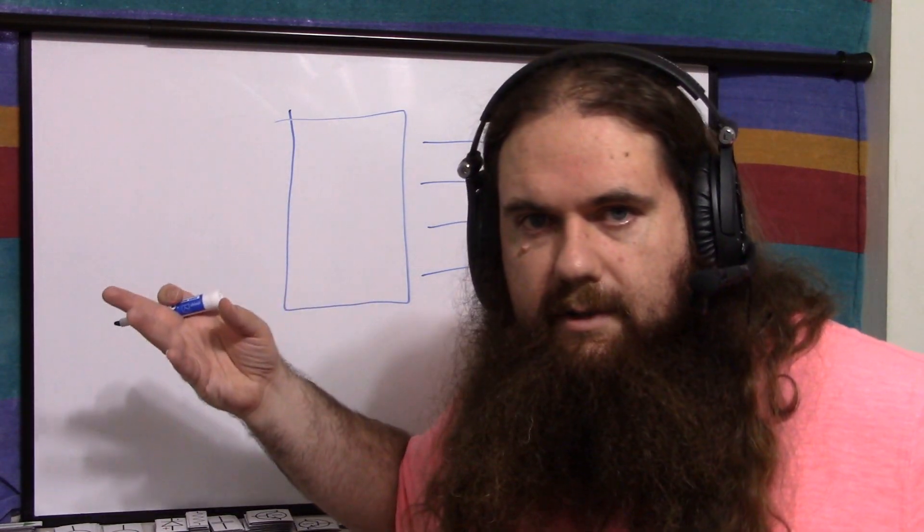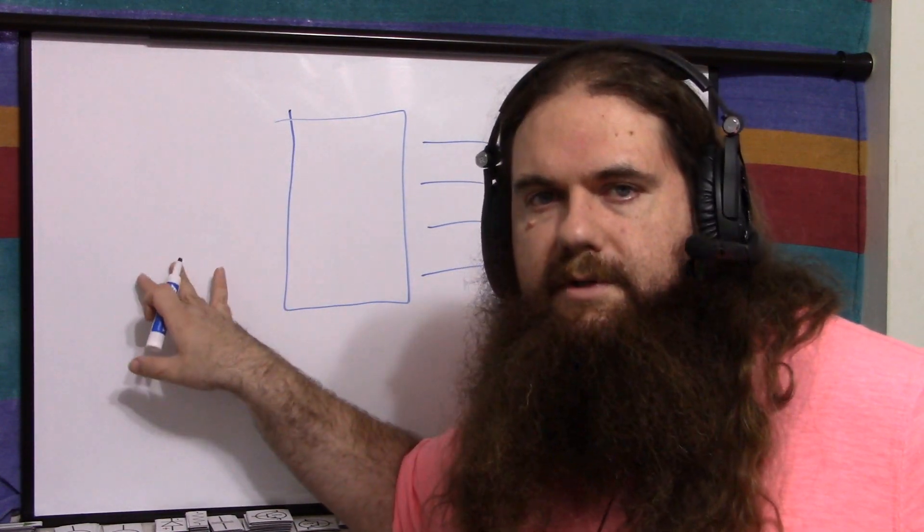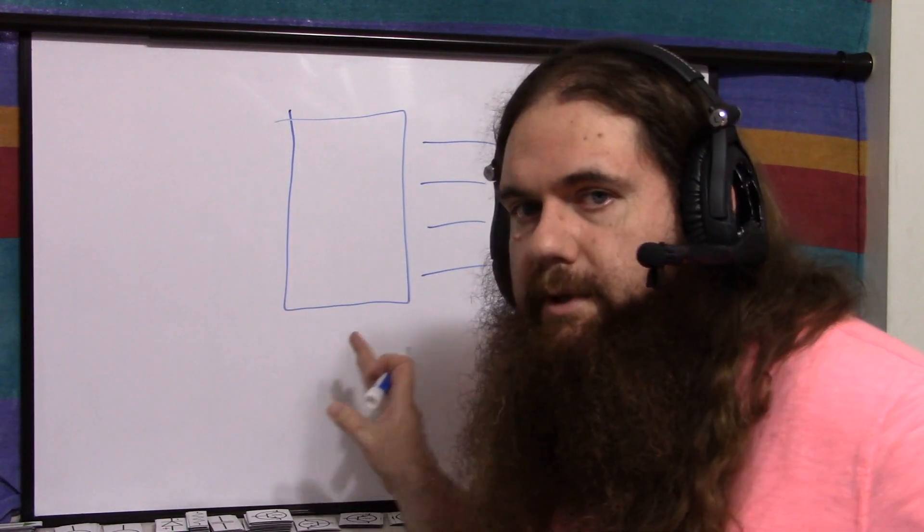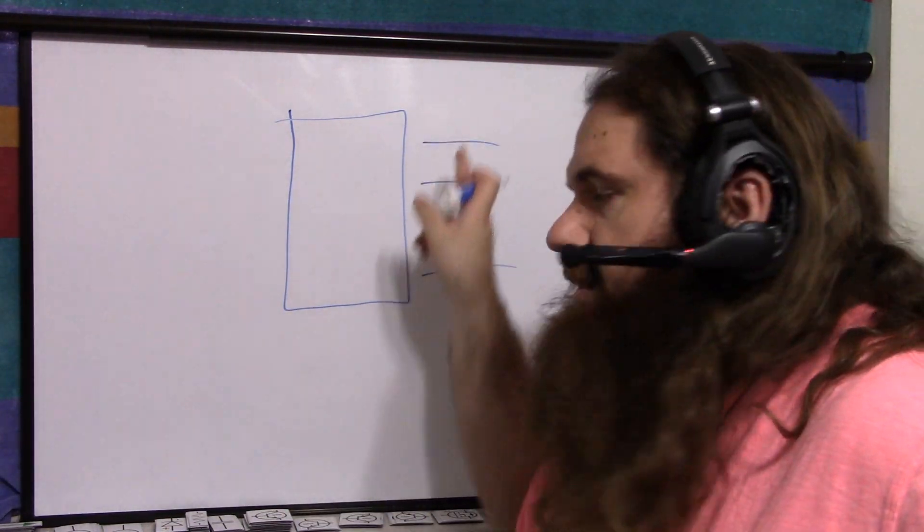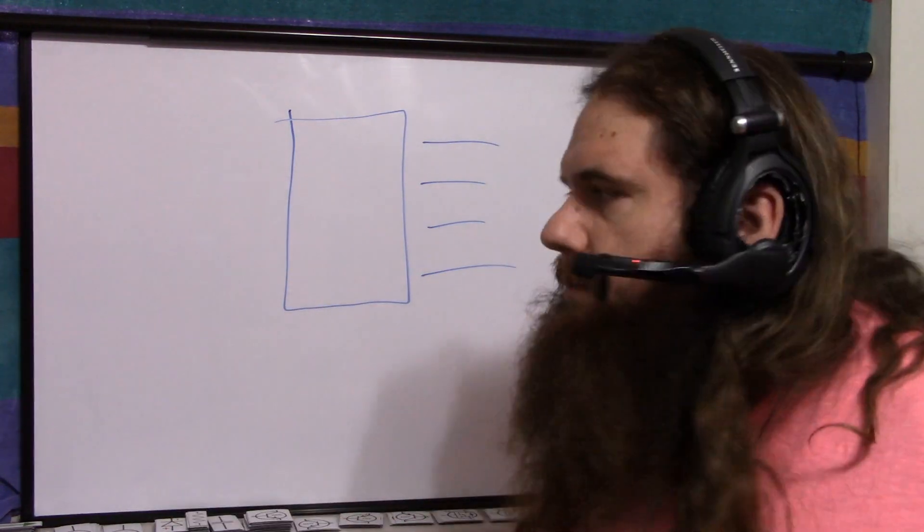So for inputs, use the MUX method, the analog switch method, or the shift register method. But for outputs, that's where most of the downsides come in: the spurious activations and having more than one on at a time.